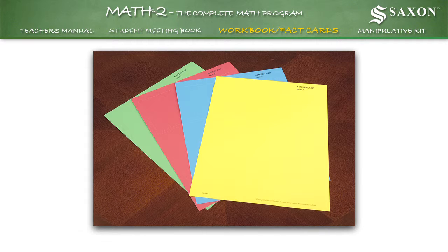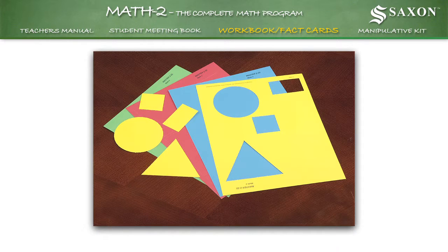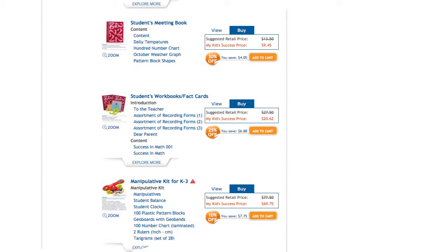The package comes with a variety of punch out geometric shapes. Selected page views of the student workbooks and fact cards can be viewed individually by clicking on the item name like this on the product page.